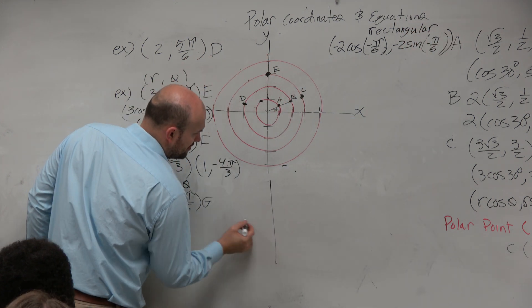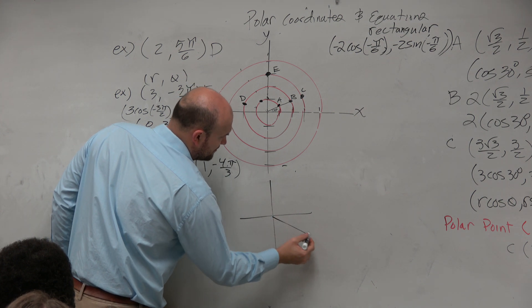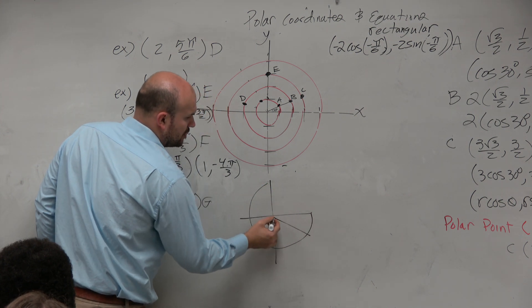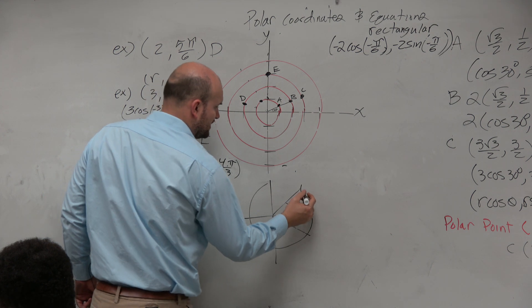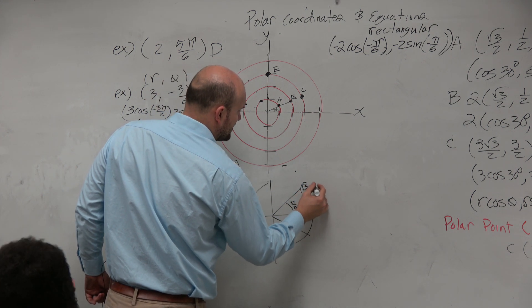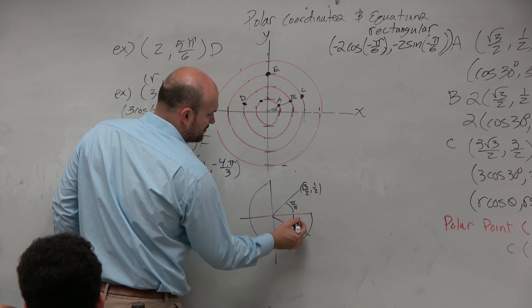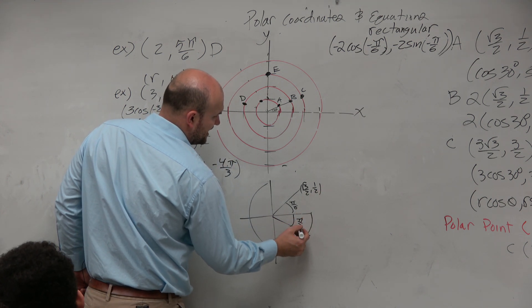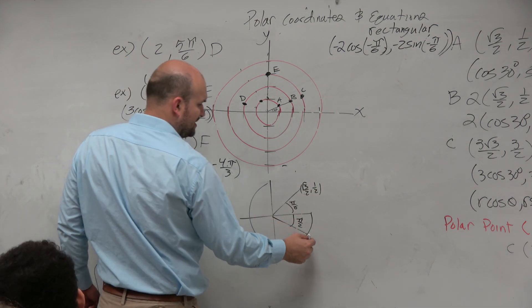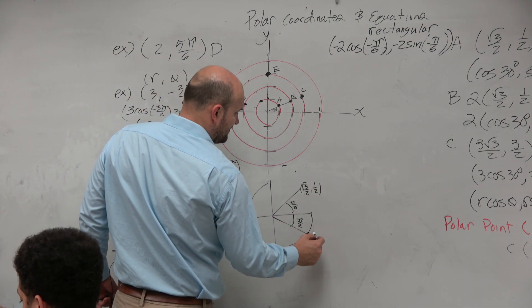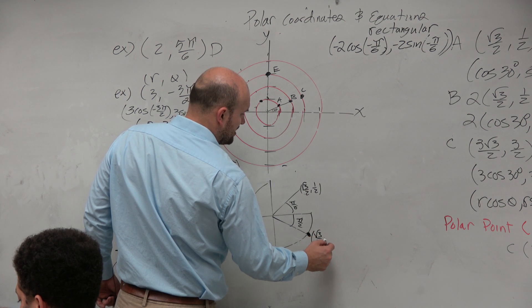Based on our unit circle, do we remember what the coordinate point is for negative pi over 6? So over here is pi over 6. They have the same reference angle. This one is square root of 3 over 2 comma 1 half. So if I have the same reference angle, but it's in the negative direction, I'm basically just reflecting this point across the x-axis. So therefore, what's going to be negative? The 1 half. So I have square root of 3 over 2 comma negative 1 half.